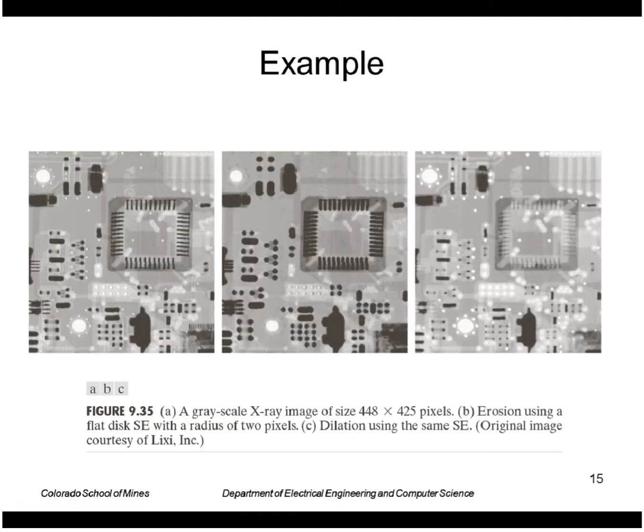So an example on a real image. Here is the input image. Here is the erosion. So it makes everything darker, lower values. Here is the dilation. So it makes things brighter.